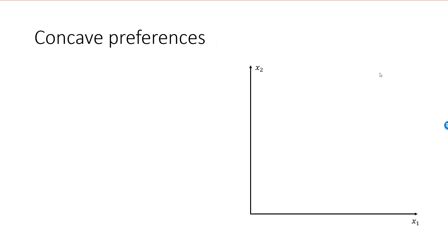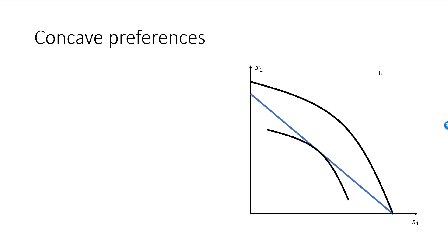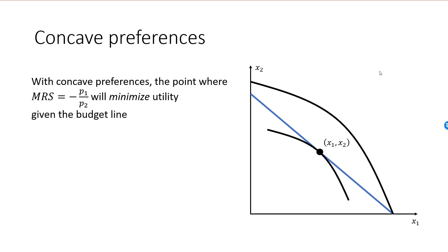We have considered strictly convex indifference curves as well as convex indifference curves. Let's consider the case when indifference curves are not convex at all — for example, when the consumer has concave preferences. Here is my budget line, and here I have drawn two indifference curves that are concave. As you can see, there is a bundle x1, x2 where the first-order condition is satisfied. The slope of the indifference curve, MRS, is equal to the slope of the budget line minus P1 over P2 at this bundle. However, this bundle will not be an optimal bundle — it will be the worst bundle out of all the bundles on the budget line.